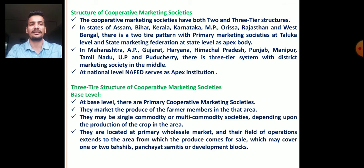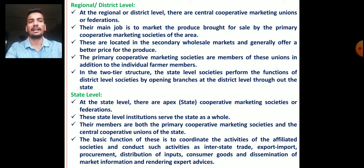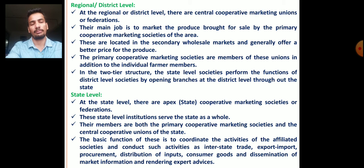The second level is at the regional or district level, where there are central cooperative marketing unions or federations. Their main job is to market the produce brought for sale by primary cooperative marketing societies of the area — primary societies sell to district level, and district level sells to state level. These are located in secondary wholesale markets and generally offer a better price. Primary cooperative marketing societies are members of these district-level unions, in addition to individual farmer members.